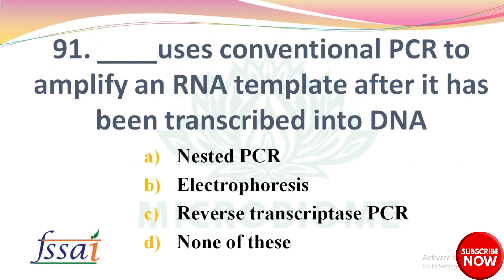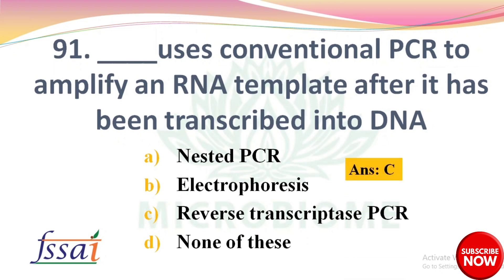DASH uses conventional PCR to amplify an RNA template after it has been transcribed to DNA. Options: A) Nested PCR, B) Electrophoresis, C) Reverse Transcriptase PCR, D) None of these. The right answer is option C: RT-PCR.